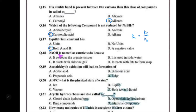Sodium hydroxide is named caustic soda because it corrodes organic tissue. It corrodes organic tissue because of its caustic action — that is why it is called caustic soda.